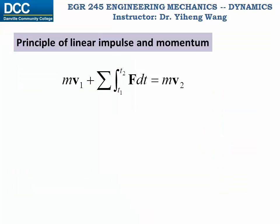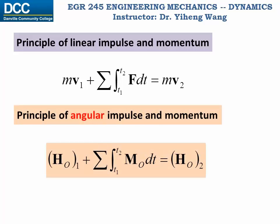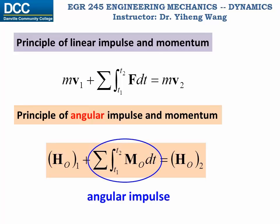Similar to the principle of linear impulse and momentum, we can write the principle of angular impulse and momentum. The integration term is the angular impulse — the total moment about point O integrated from initial time t1 to final time t2. For this principle, you must choose only one reference point O and be consistent when calculating both the angular momentum and the angular impulse.